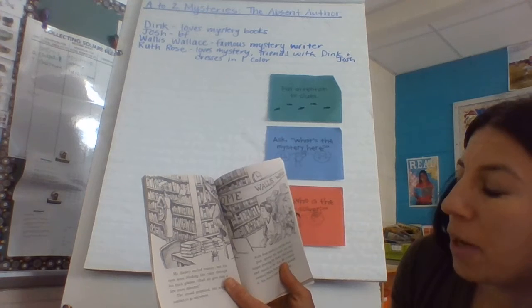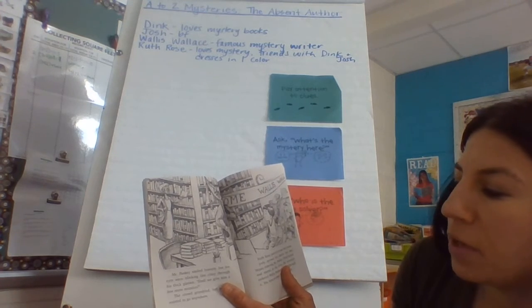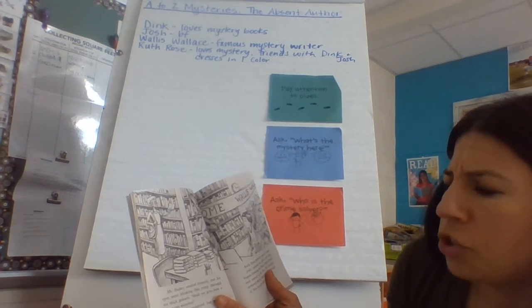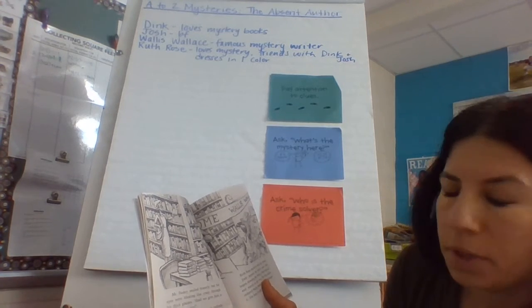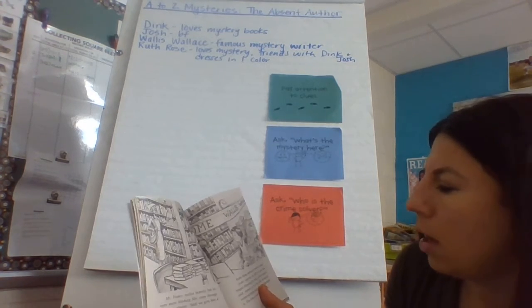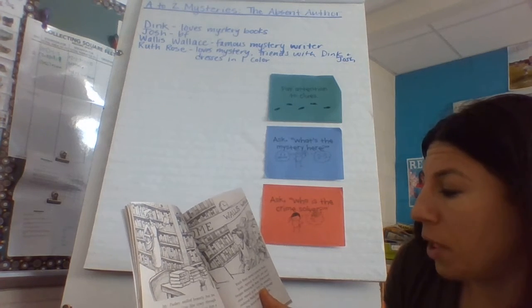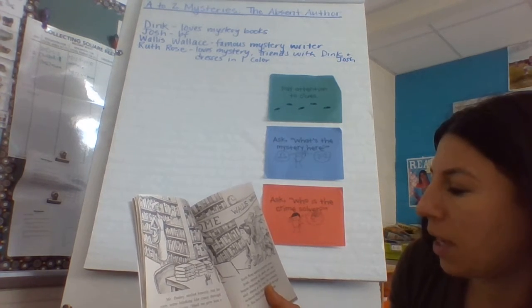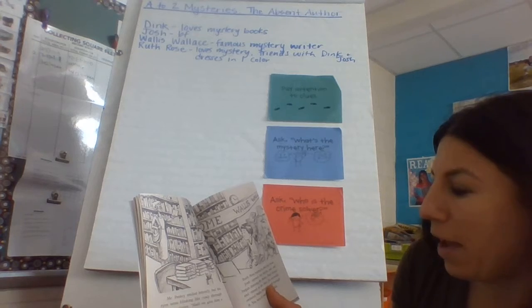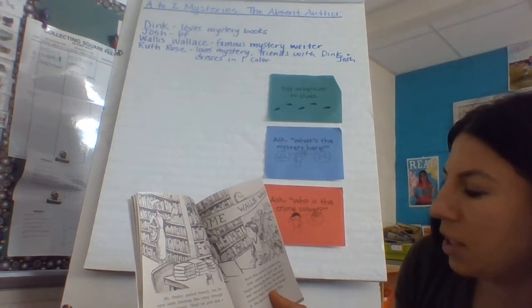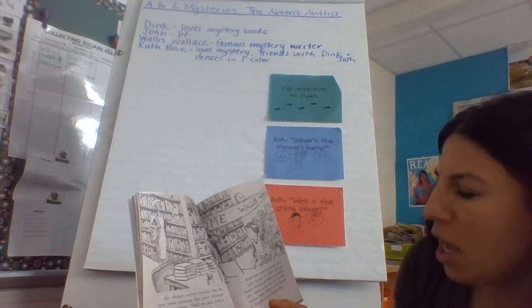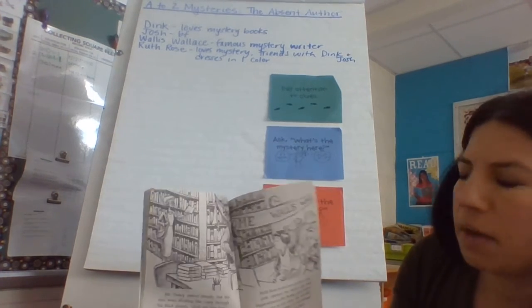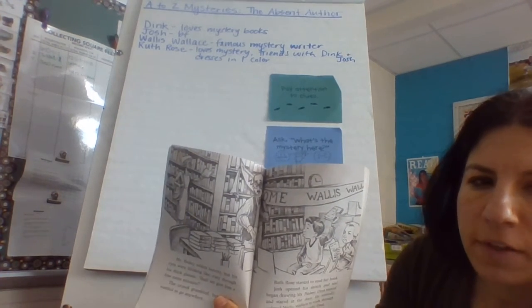Mr. Paskey smiled bravely, but his eyes were blinking like crazy through his thick glasses. Shall we give him a few more minutes? The crowd grumbled, but nobody wanted to go anywhere. Ruth Rose started to read her book. Josh opened his sketch pad and began drawing Mr. Paskey. Dink turned and stared at the door. He mentally ordered Wallace Wallace to come through it. You have to come, thought Dink. Here's a picture for you guys.